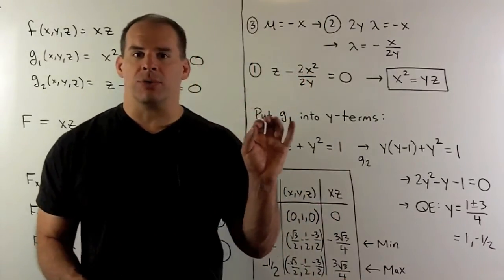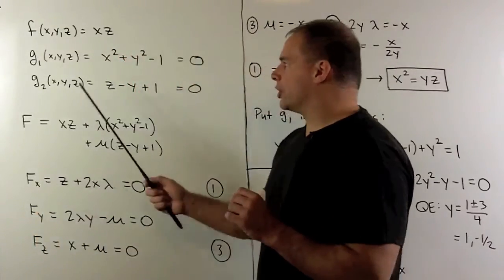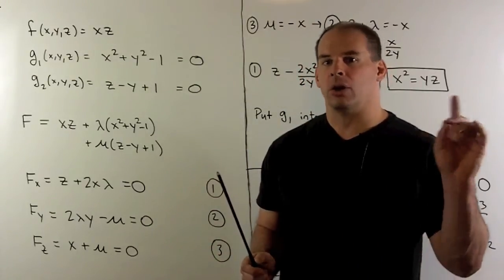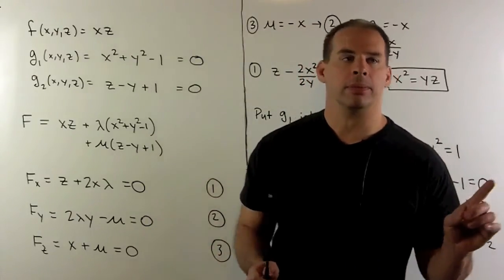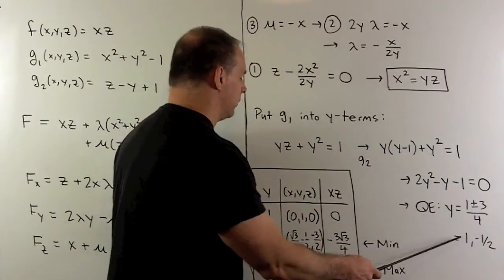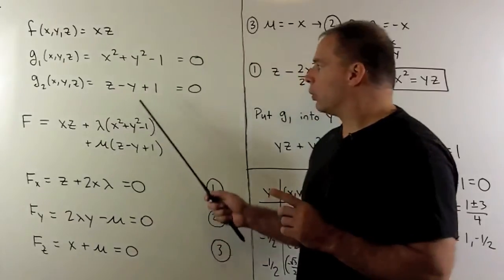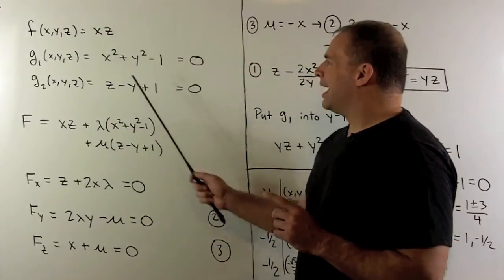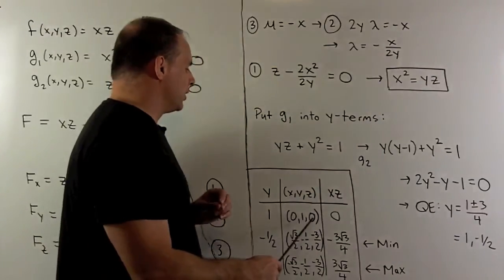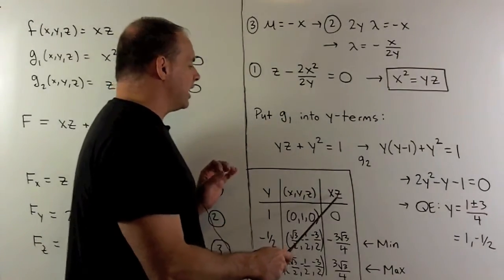I want to take those values of y, put them back into our constraint equations, see what points come out, then evaluate and look for a maximum and minimum. If we have y equal to 1, then we have z equal to 0, x² equal to 0, so I get the point (0,1,0). If we take xz, we get 0.